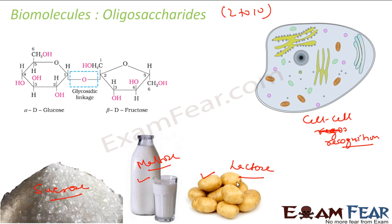Most oligosaccharides are disaccharides — they give two molecules of monosaccharides. So oligosaccharides have either two or more than two, but less than ten, sugar molecules. On hydrolysis they yield those monosaccharides. Here is one example of an oligosaccharide.